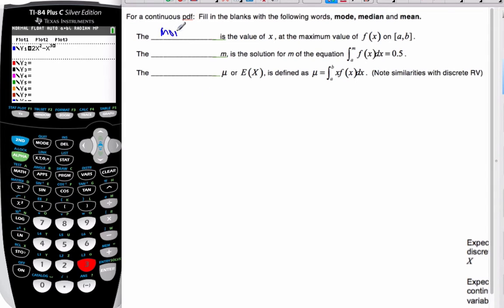Well, this is mode because it's the maximum. So think about some function where it's gone like this. The maximum will be the mode. The blank is m, is the solution for this equation. Well, this is talking about 50%, and so this is the median. And then we're left with the mean is by this calculation here.